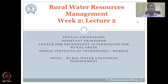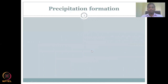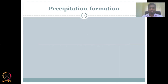Hello everyone, welcome to Rural Water Resource Management NPTEL course, week lecture 2. In the first lecture of week 2, we looked at what parameters we are going to examine in the hydrological cycle. We identified 6 parameters to be discussed in detail this week, which included precipitation, runoff and discharge, and evaluation of precipitation.